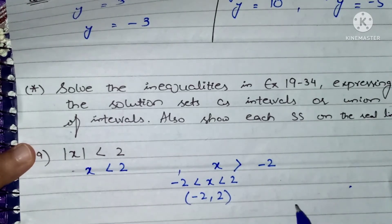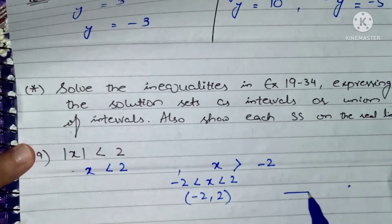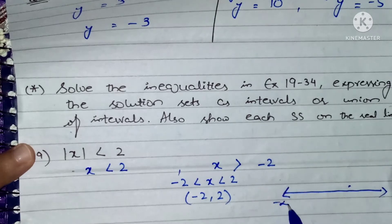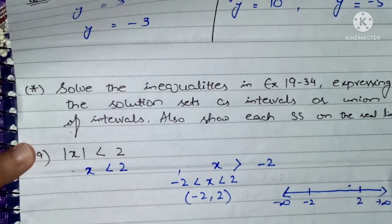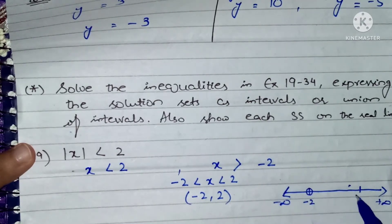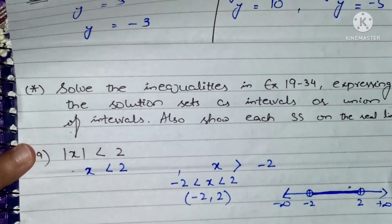If I plot it on the real line, I have negative infinity and positive infinity. Somewhere here we have minus two, and somewhere here we have two. We shade the region between them. This was question number 19.